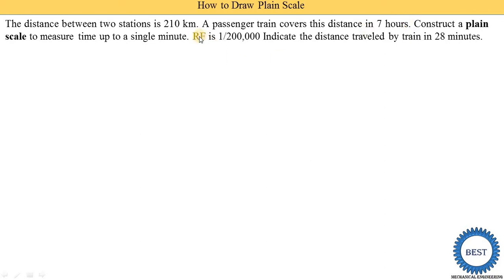The Representative Fraction (RF) is 1 divided by 2 lakh. On that scale, we need to indicate the distance traveled by the train in 28 minutes.